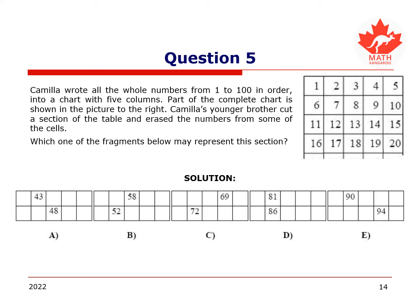We can see that table sections A, D, and E do not work. For example, in table section A, we have 43 in the second column, but it ends with 3, so that is not possible for column 2. Then, in table section B, the numbers satisfy the pattern of the units digits. However, the number 58 is above the number 52, and as we know that the numbers increase from top to bottom, this is not possible. Therefore, the only feasible section of the table is C. Hence, the answer is C.